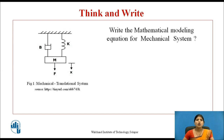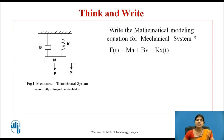According to Newton's law of motion, the sum of forces applied on a rigid body or system must be equal to the sum of forces consumed to produce displacement, velocity, and acceleration in the various elements of the system. So the mathematical equation becomes: F(t) = M·A + B·V + K·X(t).